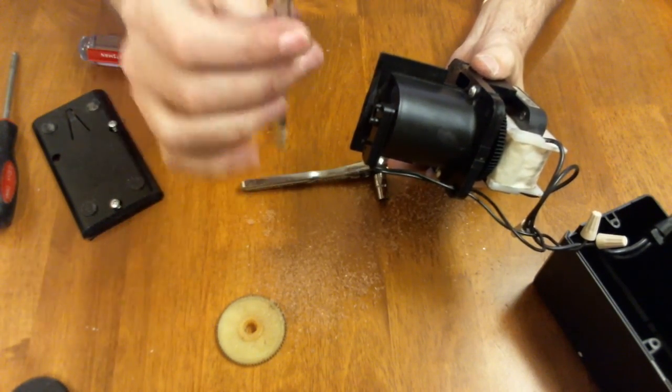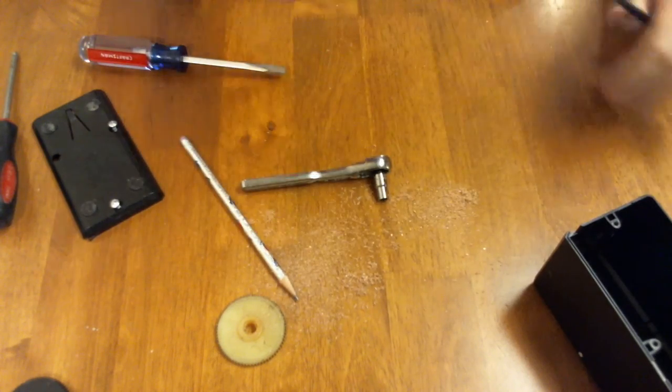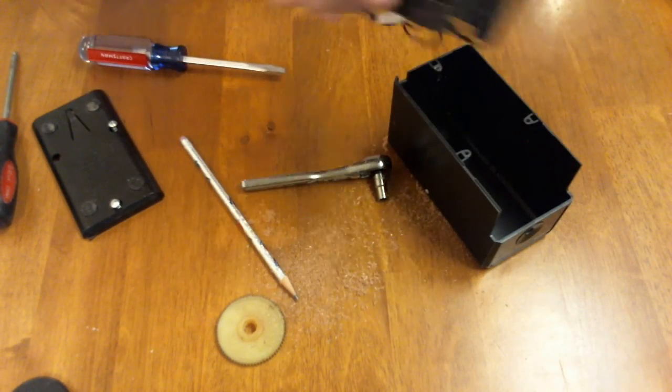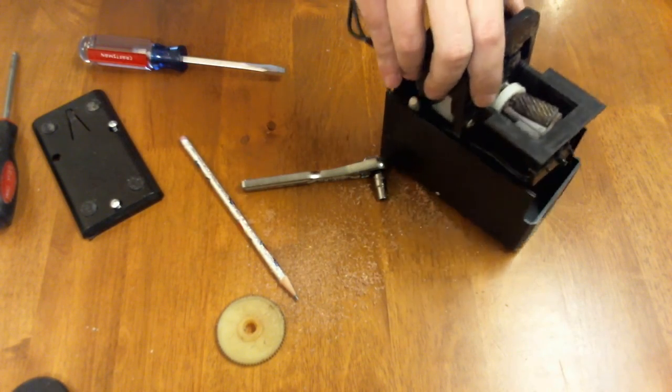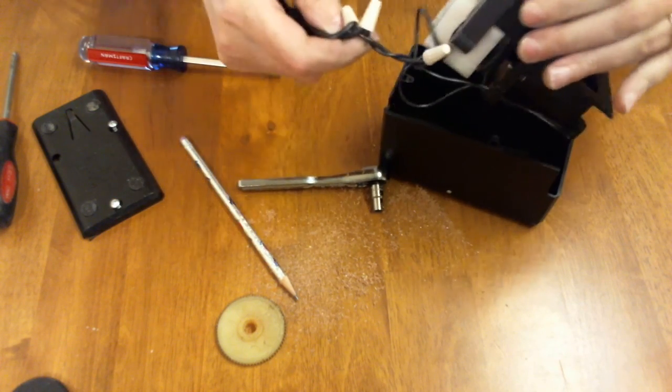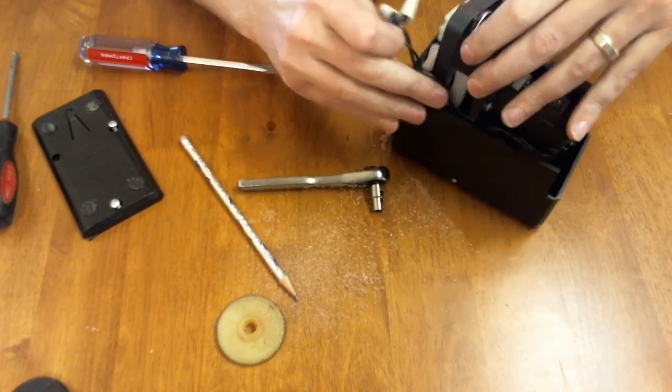And that's pretty much it. Pencil sharpener. In order to reassemble the whole thing, take your housing, place it back in. You want the wire nuts towards the top. That way they're not underneath, preventing the motor from sitting in all the way.